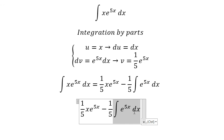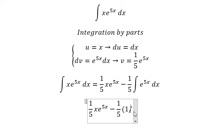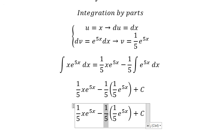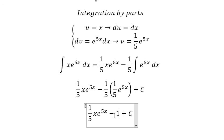The integration of this one gives us 1 over 5 e to the power of 5x, and we add c. This gives us 1 over 25 e to the power of 5x.